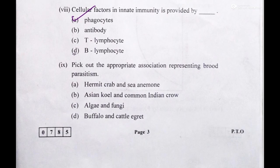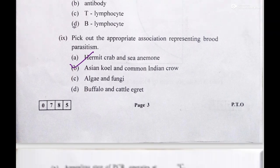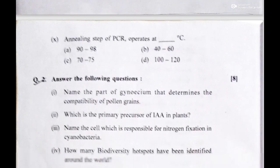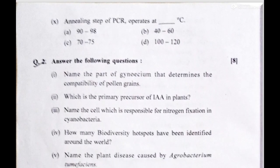The ninth MCQ: pick out the appropriate association representing brood parasitism. Its answer is Asian koel and common Indian crow. The tenth MCQ: the annealing step of PCR operates at how many degrees Celsius? Its answer is B — 40 to 60 degrees Celsius.